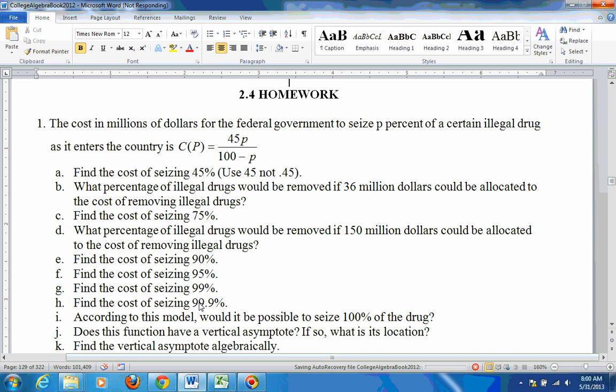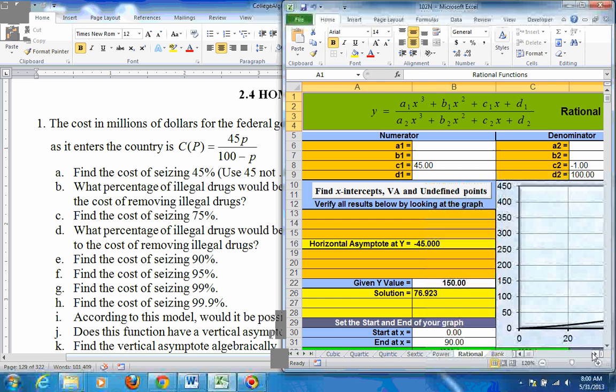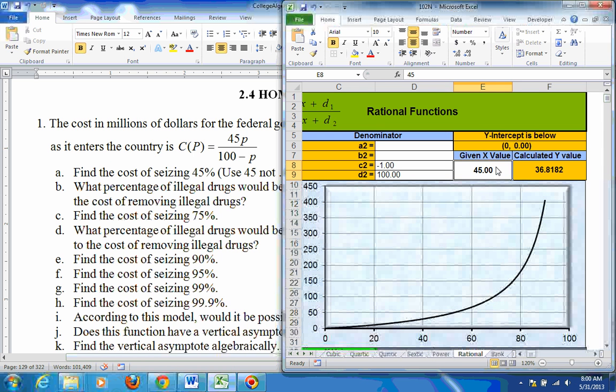Like 99.9 to seize 99.9% of illegal drugs, you would have to put over here for the X 99.9. And here's your cost in units of millions of dollars, so it would actually be $44,955,000,000. So that's a lot of money that would cost.